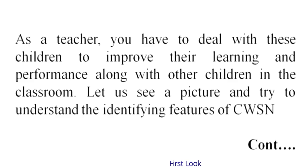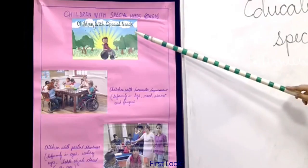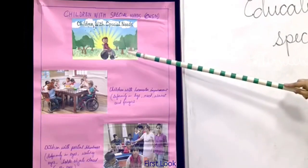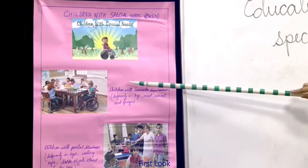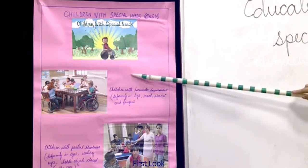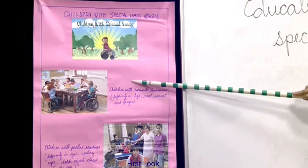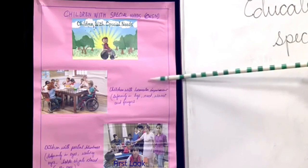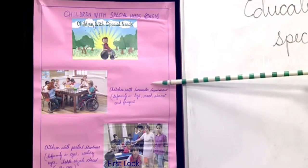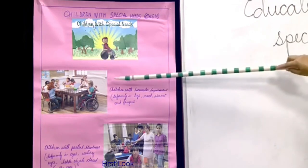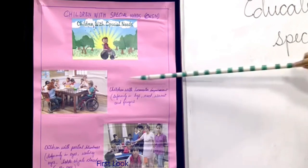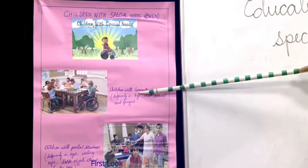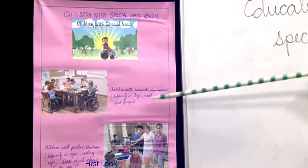Let us see a picture and try to understand and identify the features of CWSN. In this picture I have brought for you some pictures related to the different disabilities of the children. For example, in this picture I am trying to show you the children with locomotor impairment. The main features of children with locomotor impairment is deformity in their legs, neck, waist and fingers.